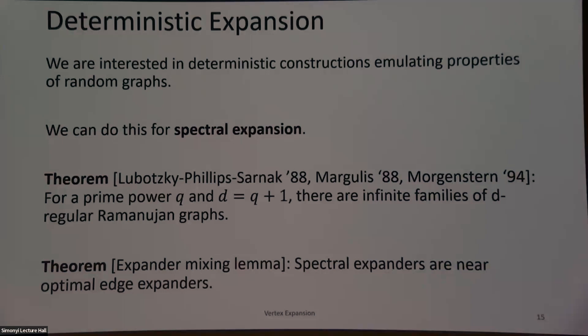We know that random graphs are optimal or near-optimal. So the next question is: can we come up with deterministic examples that also satisfy these bounds? We can do this for spectral expansion — there's the Lubotzky-Phillips-Sarnak graph, and other constructions of Margulis and Morgenstern, that give infinite families of Ramanujan graphs with optimal spectral expansion. Because of the relationship between spectral expansion and edge expansion, these will also be very good edge expanders.